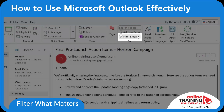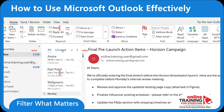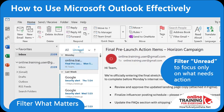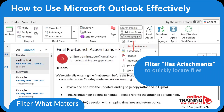If you click on the Filter Email button, you will see that you can filter by unread, has attachment, flagged, important, and a lot of other categories. I like unread, which is also available in the mailbox itself, because it allows me to focus only on the important messages that need some action.